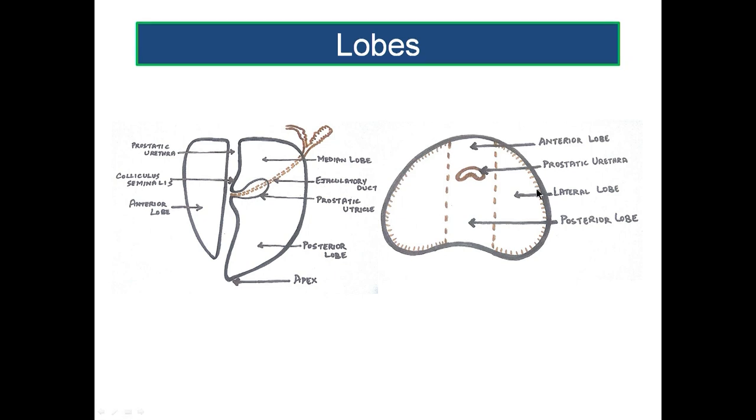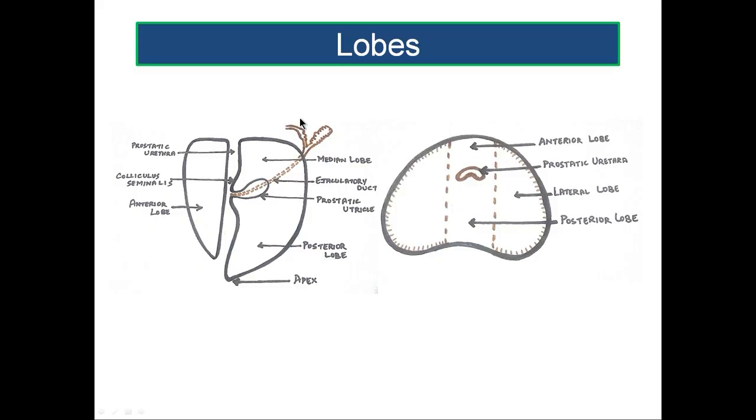This lobar anatomy of 5 lobes is no longer followed. Only during fetal life does the prostate show 5 lobes; beyond 20 weeks of gestation up to benign prostatic hypertrophy, only 3 lobes are found — 2 lateral and 1 median. The earlier surgical classification is what is now followed anatomically.